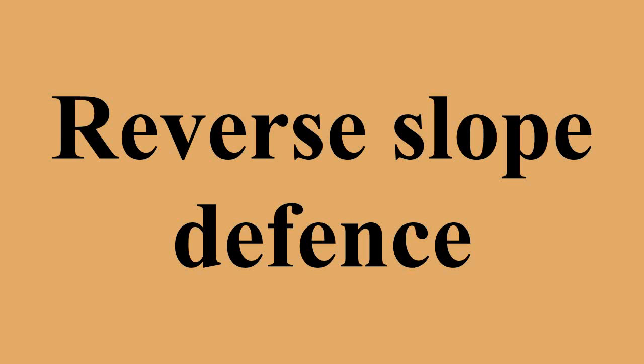A reverse slope defense is a military tactic where a defending force is positioned on the slope of an elevated terrain feature such as a hill, ridge, or mountain on the side opposite from the attacking force.